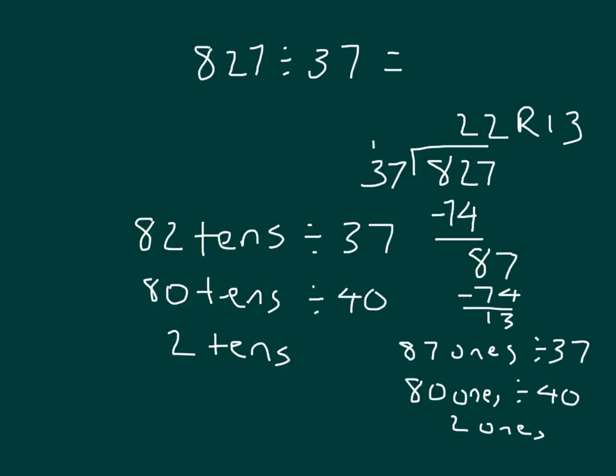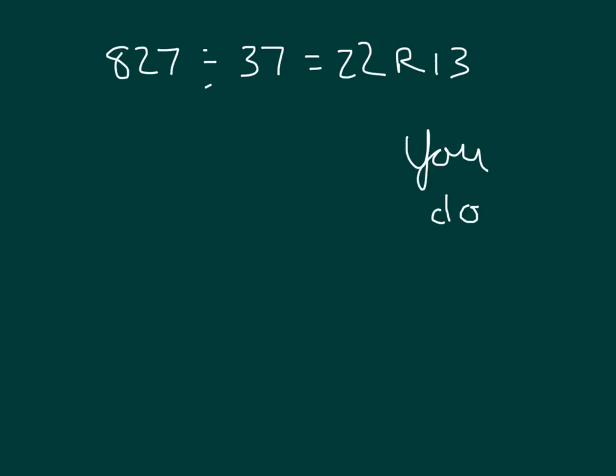Let's complete a check just to make sure. I've written that whole equation right there, 827 divided by 37 equals 22 remainder 13.